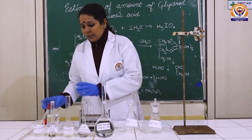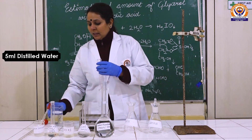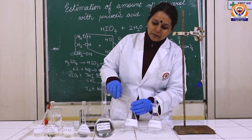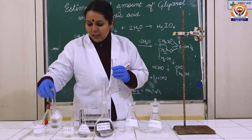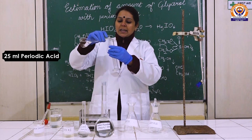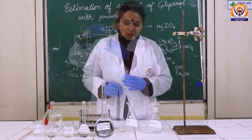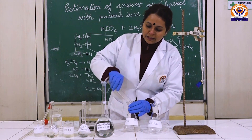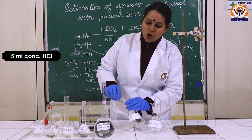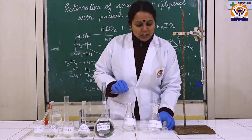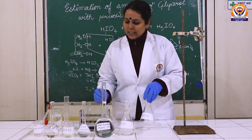For the blank solution, we will take 5 ml of distilled water, then we will add 25 ml of periodic acid — we have taken 0.05 M — and then 5 ml of concentrated HCl along the walls of the flask. We will cover it.